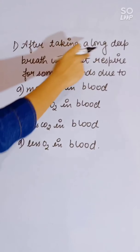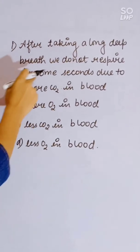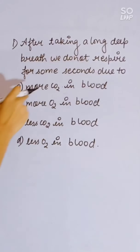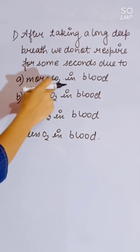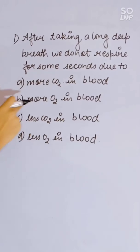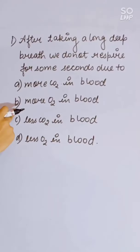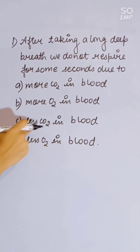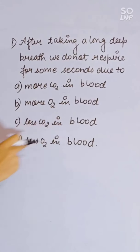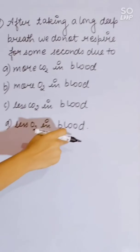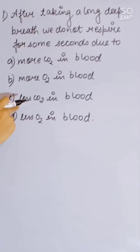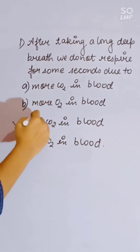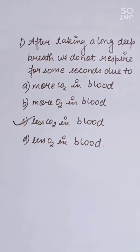After taking a long deep breath, we do not breathe for some seconds due to: more CO2 in blood, more O2 in blood, less CO2 in blood, or less O2 in blood. Correct answer is C — less CO2 in blood.